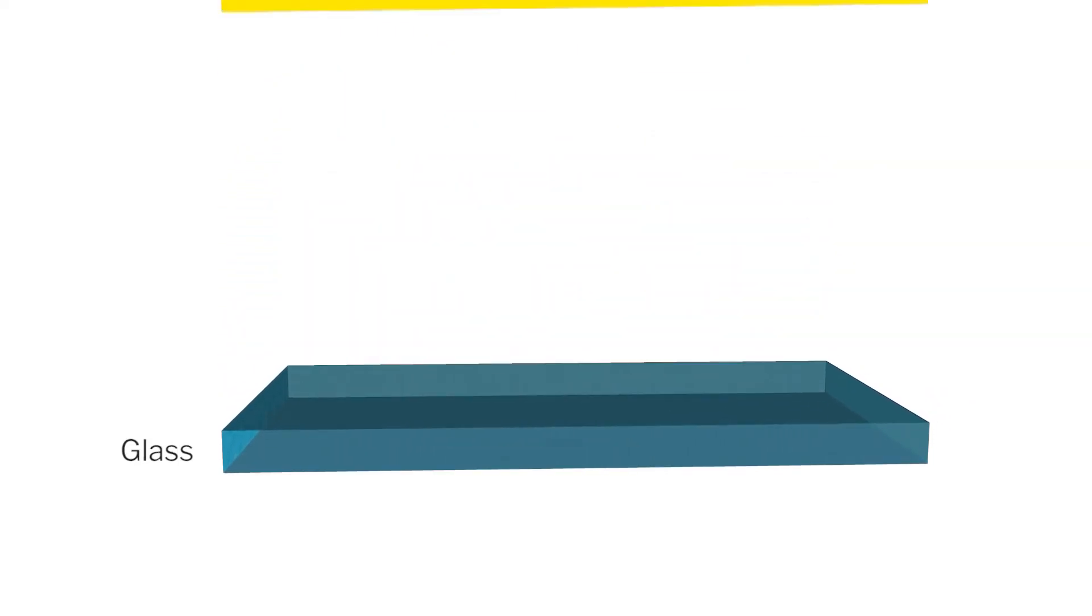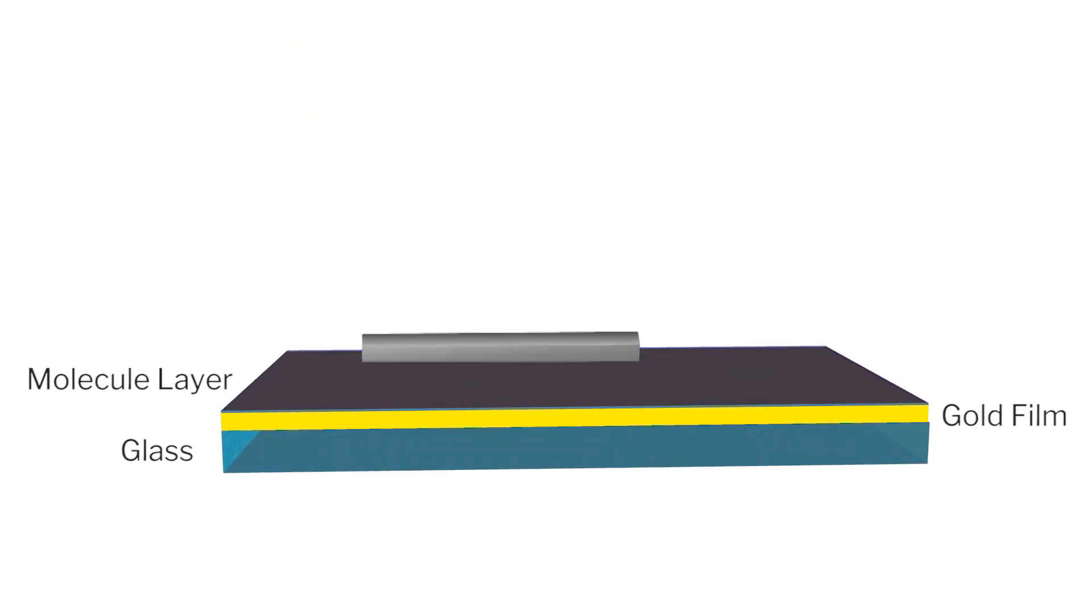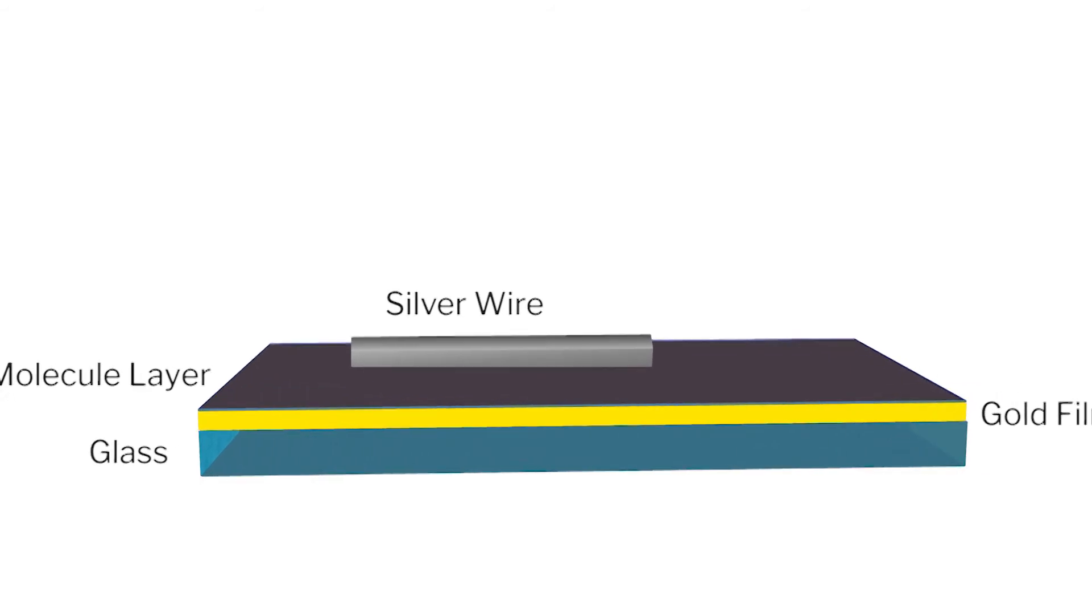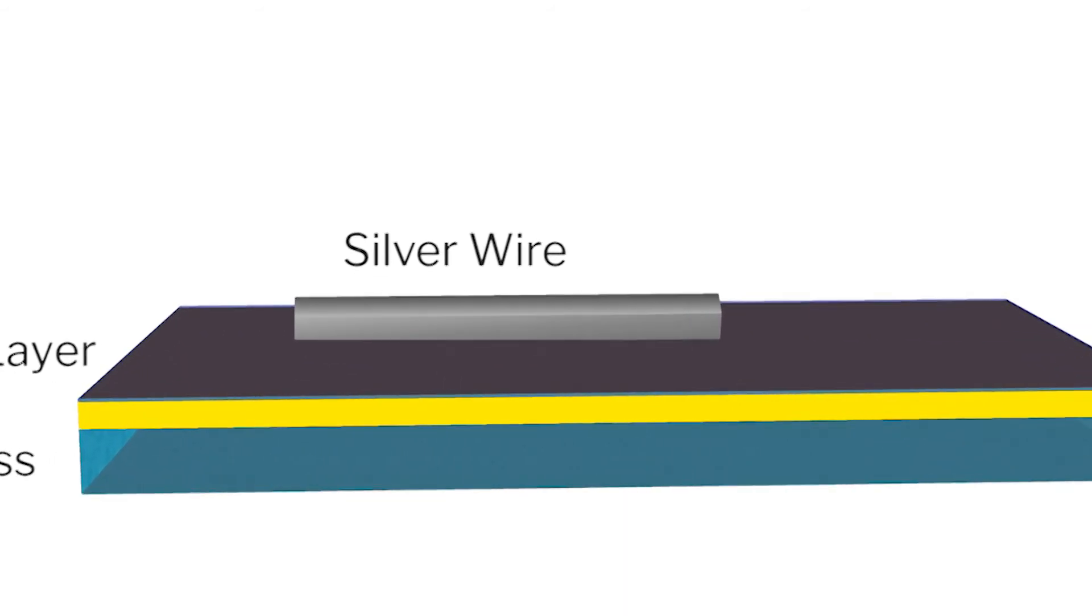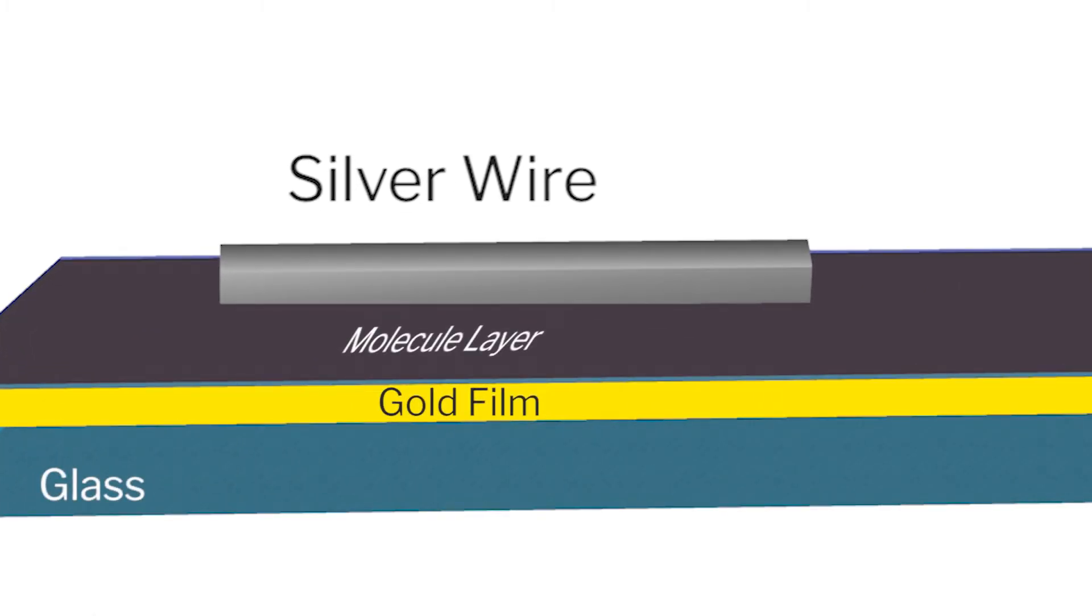The idea is that you actually take a molecule or material of interest and bring it in close proximity to a metallic nanostructure. So here it's a special cavity where it's elongated in one of the dimensions and contracted in the other dimension—specifically, it's a silver wire on a gold film. Now the molecules are sandwiched between the silver wire and gold film.